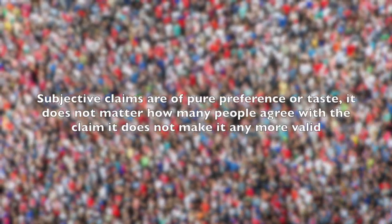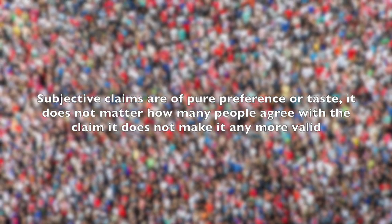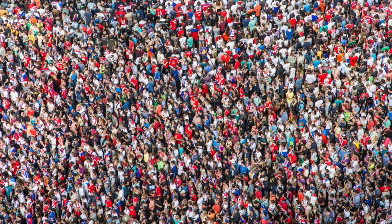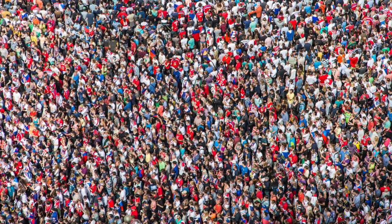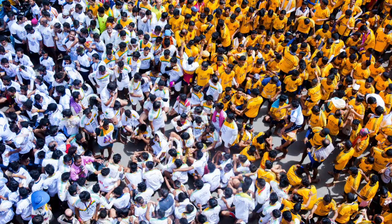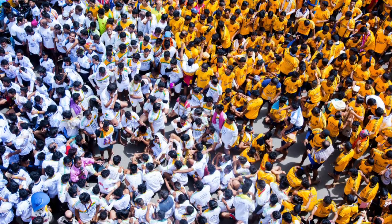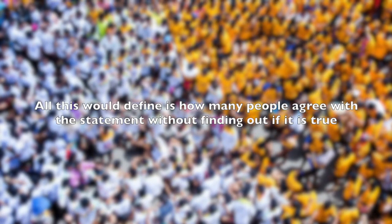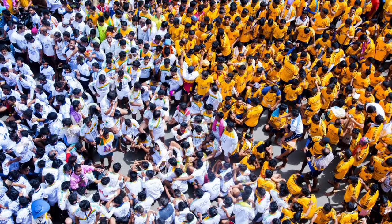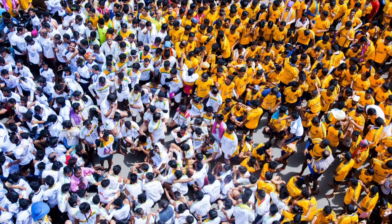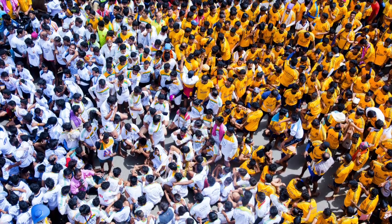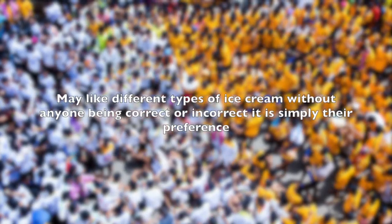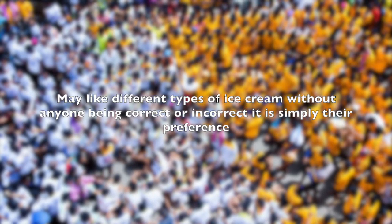Subjective claims are pure preference or taste, and it does not matter how many people agree — it does not make the claim any more valid. Agreement simply means people happen to have the same preferences. For example, taking a poll about what ice cream people like would not derive an objective reason; it would only tell us how many people agree with the statement, not whether it is true. We would find out how many people like chocolate, but not whether chocolate ice cream is truly objectively better than vanilla — because no such objective truth exists. Different people may like different flavors without anyone being correct or incorrect.